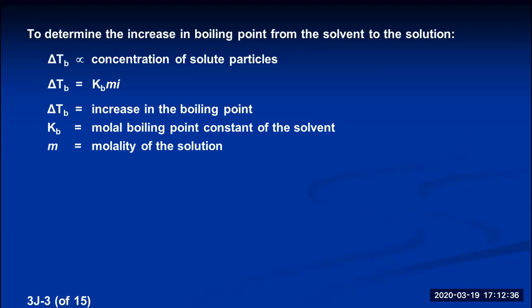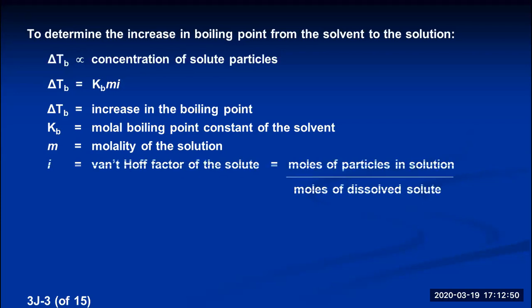From the molality we calculate the concentration of dissolved solute particles, unless it's an electrolyte. If it's an electrolyte, the solute dissociates into multiple ions per formula unit, so we have one more term: i, called the Van't Hoff factor. It tells us how many ions a particular solute formula unit will dissociate or ionize into. It's defined as moles of solute particles in solution per moles of dissolved solute. Let's look at four different solutes as examples.